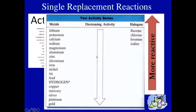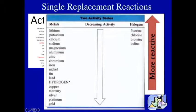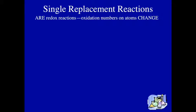This is the activity series I'll be using for this particular set of slides, but there are certainly others you may reference. We have the metals, and hydrogen is included with the metals — if you look at the periodic table, hydrogen is in group one. We also have the halogens, which follow the same order you would see on the periodic table, fluorine being the most active and iodide being the least active. All single replacement reactions are redox reactions, and oxidation numbers change on atoms in these equations. The more active element compared to a compound will become an ion.